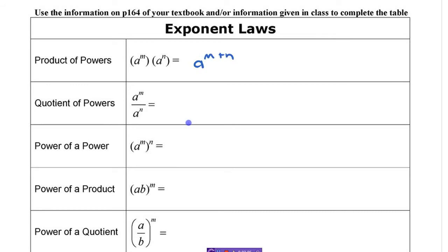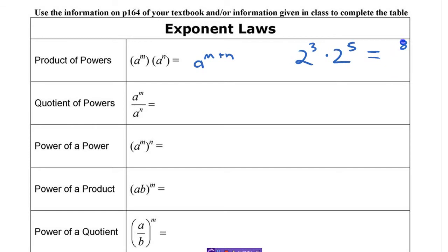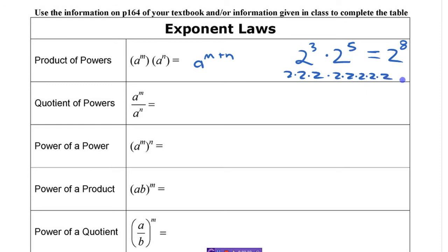When there's an actual number there, if somebody says 2 to the 3 times 2 to the 5, a lot of times people will get the exponent right but mistakenly put 4 as the base — it's not 4. If you have 2 to the 3 times 2 to the 5, it's 2 to the 8. Written out: there are three 2s here and five 2s here, altogether eight 2s — not eight 4s.